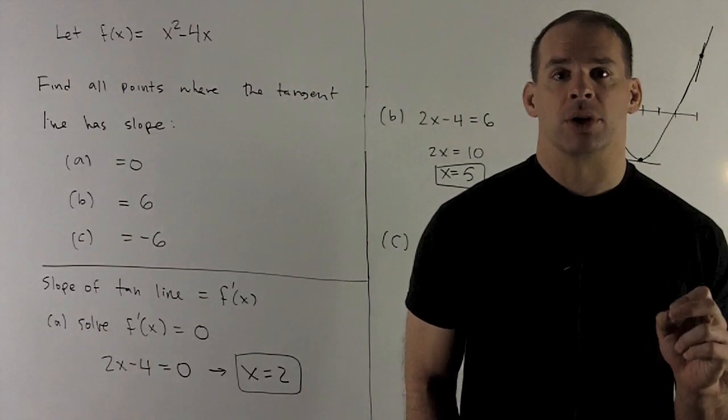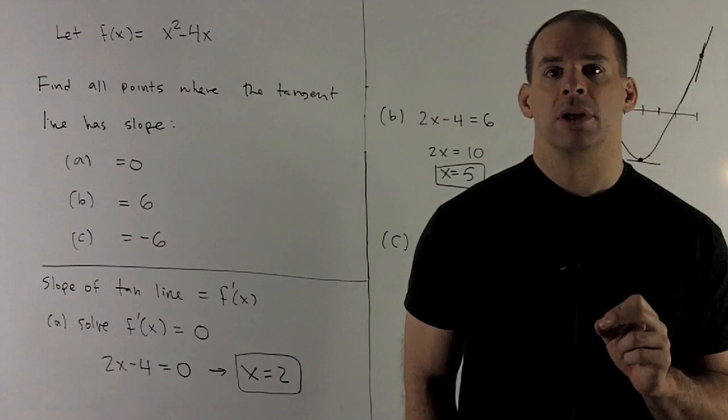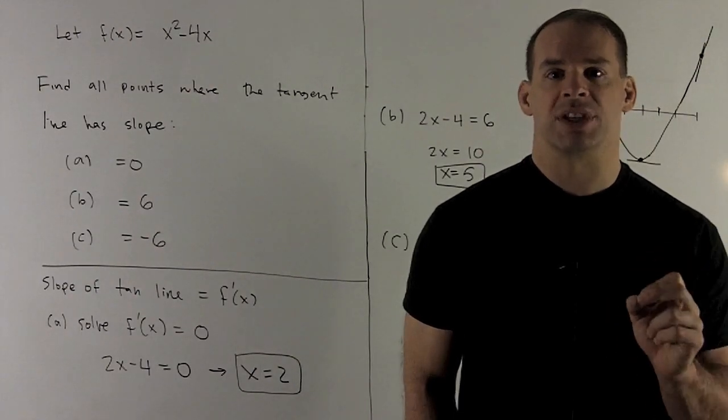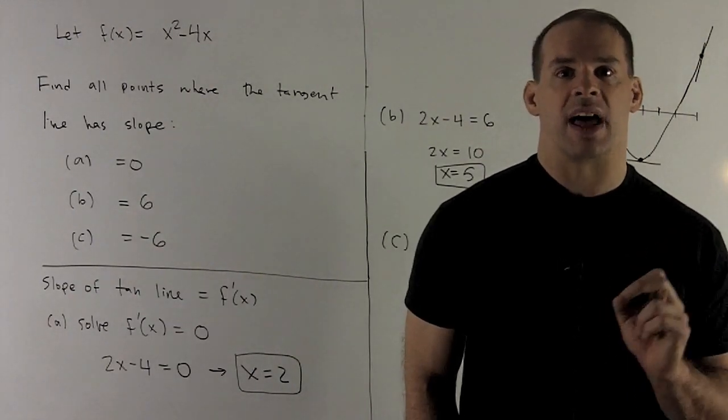Our derivative is going to be 2x - 4, so I need to set that equal to 0, 6, and -6, and then solve for x.